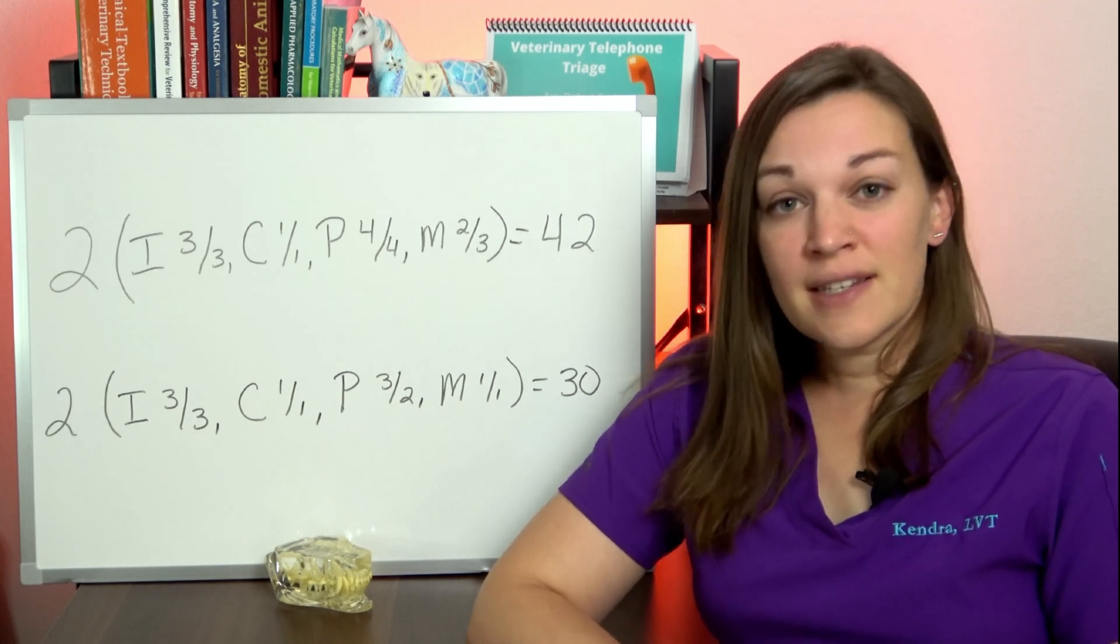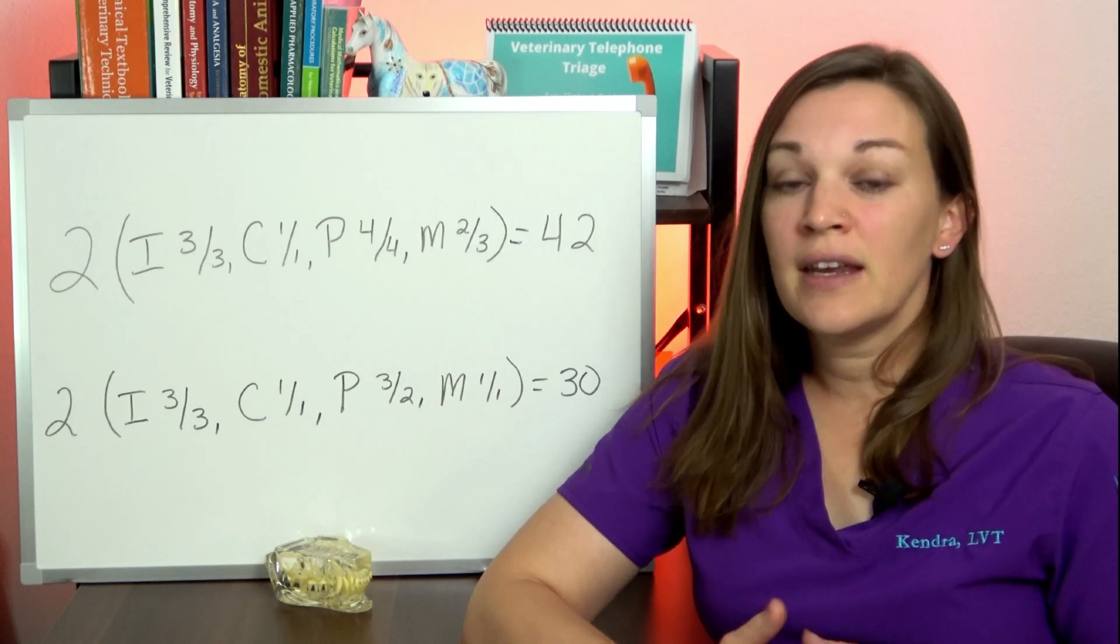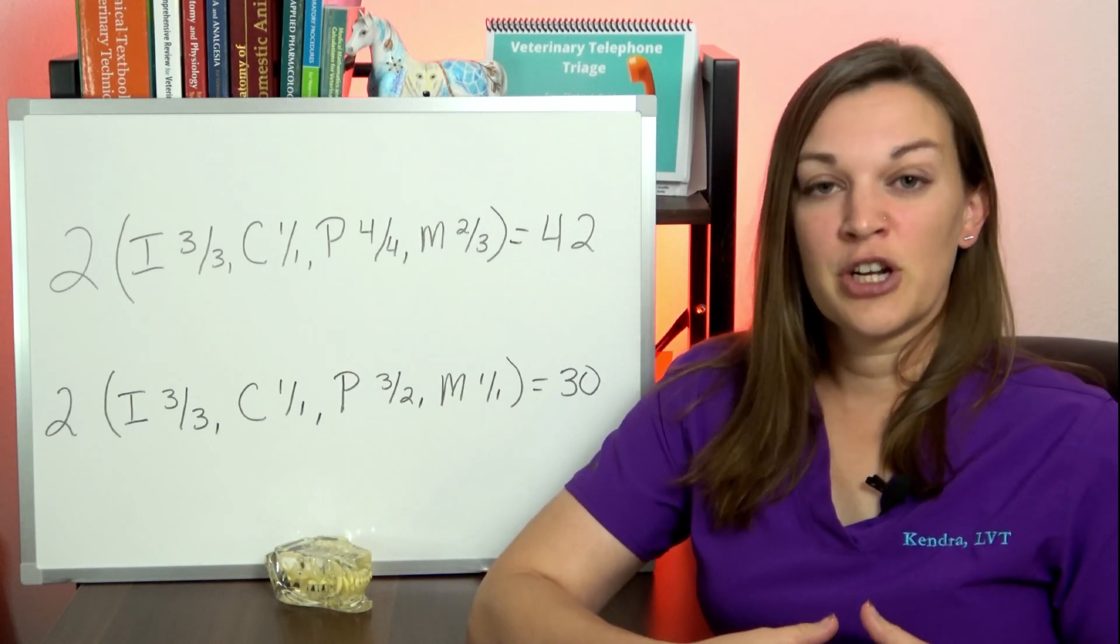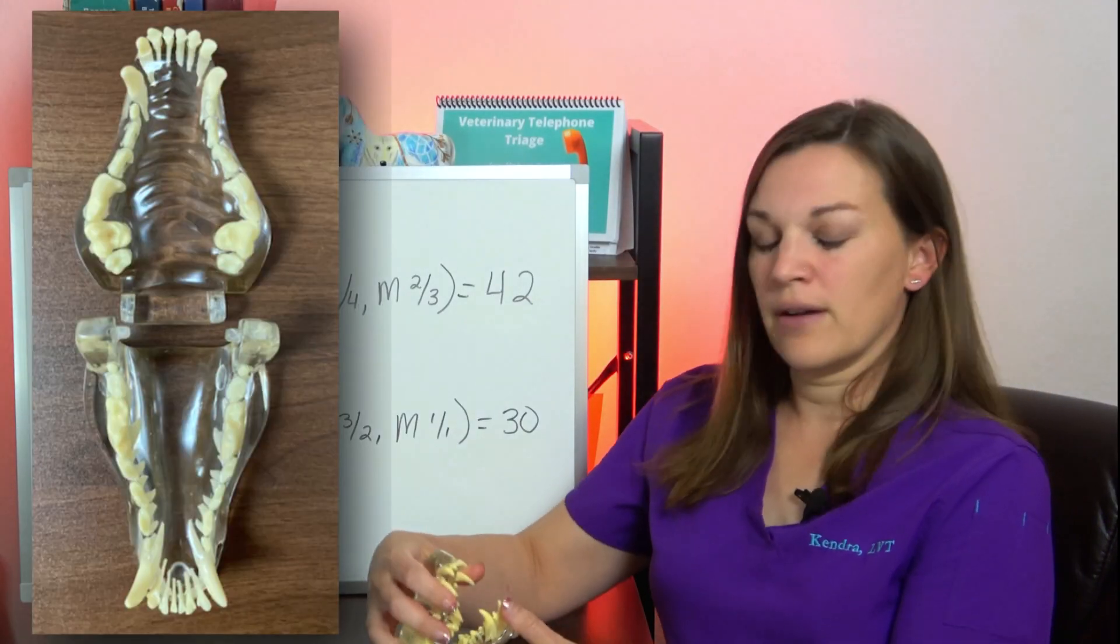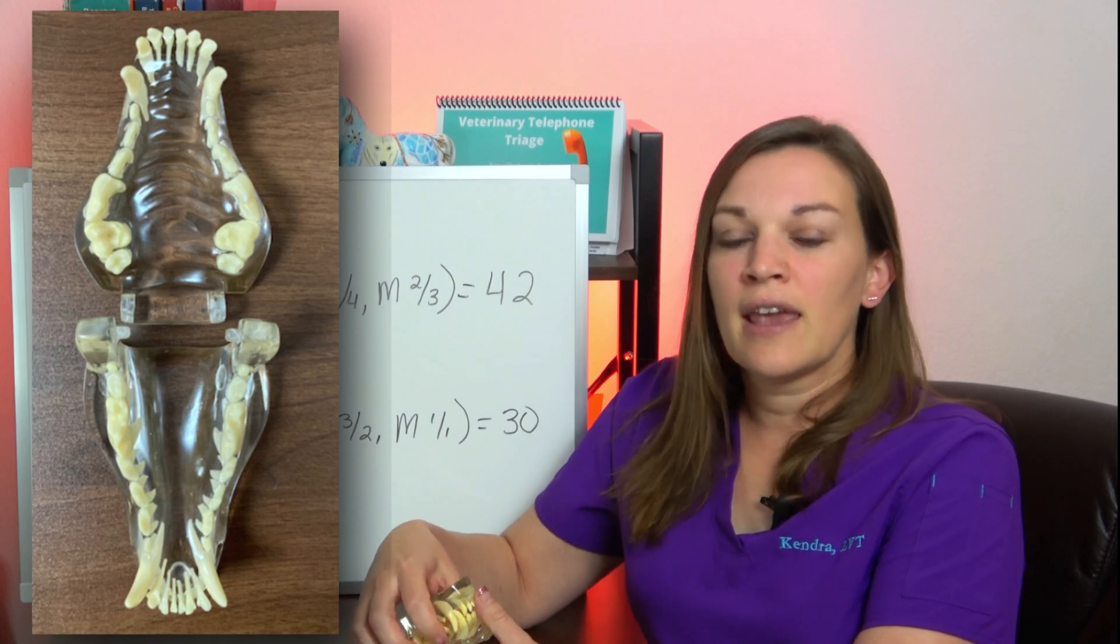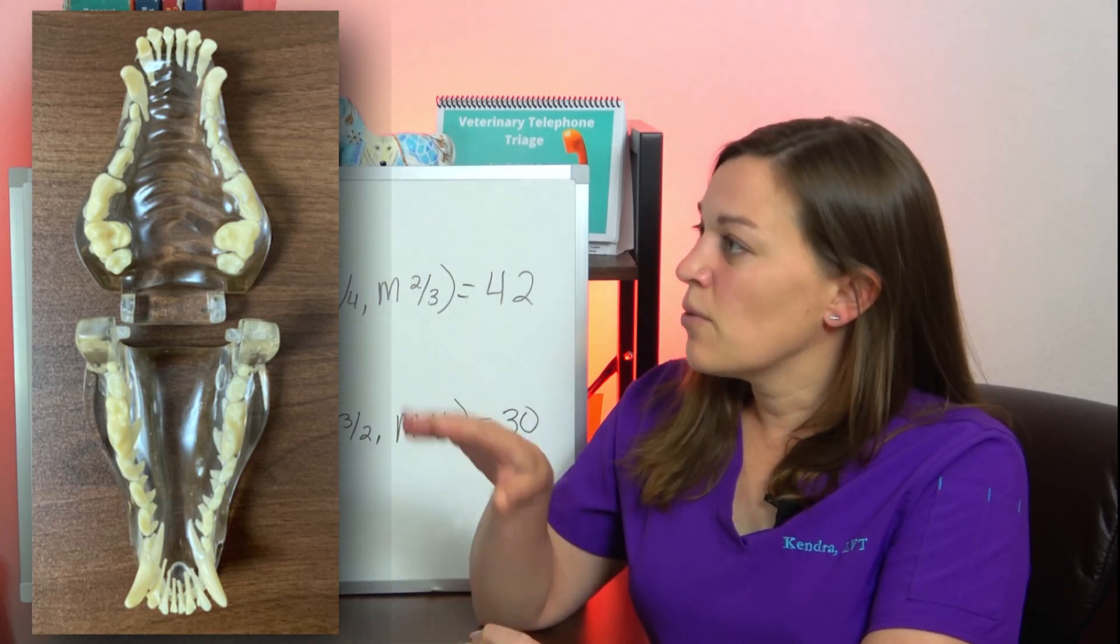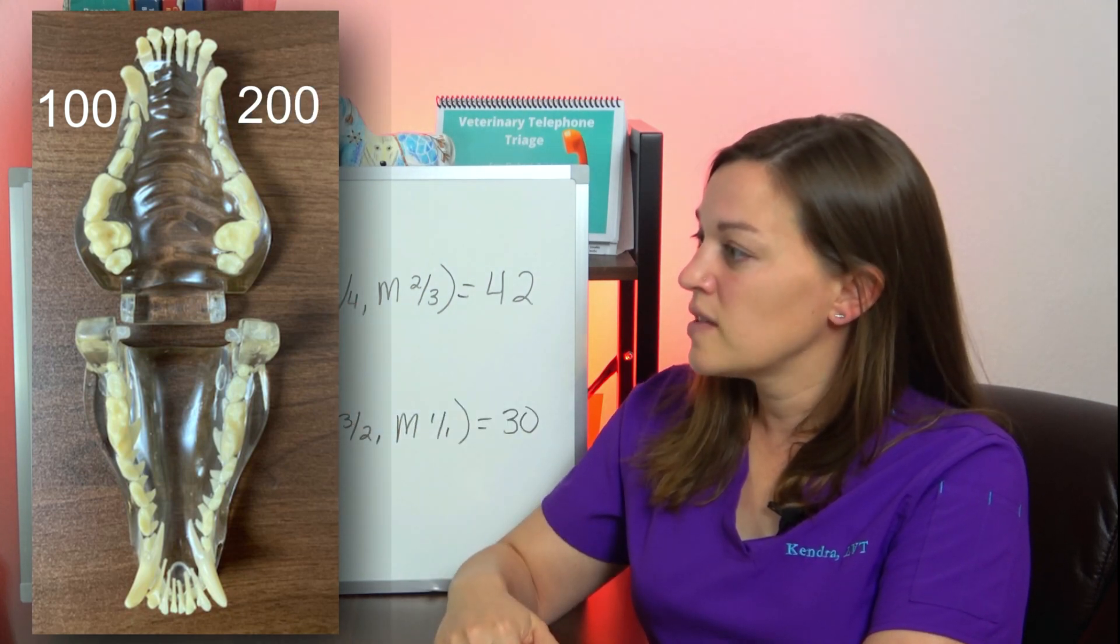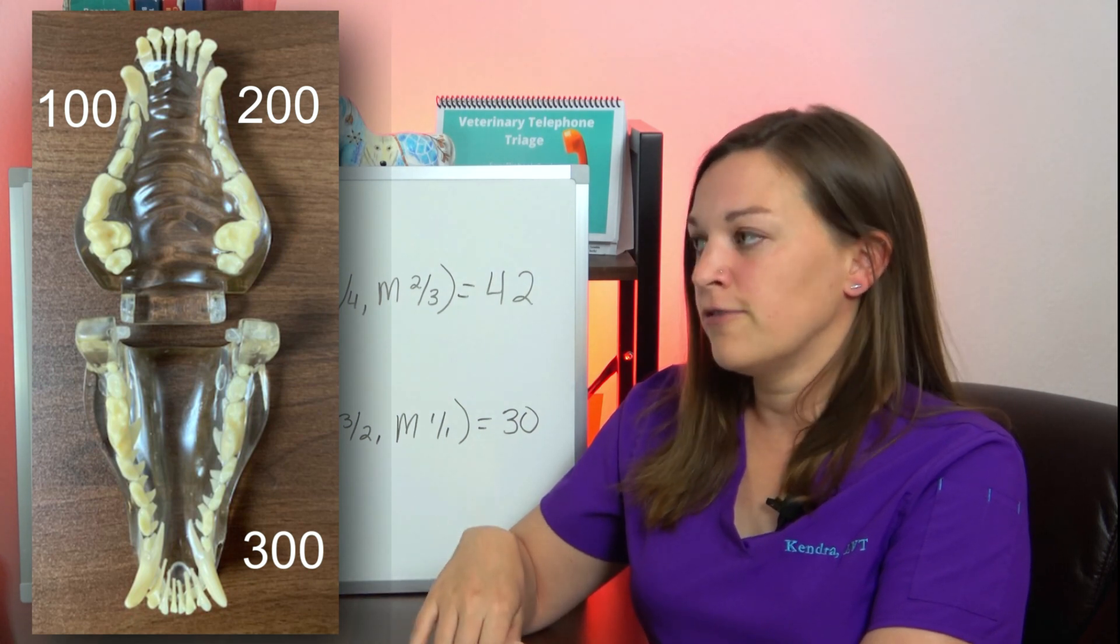When discussing the numbering system, the mouth is broken down into four different arcades and each arcade has their own hundred block designation. We'll open our model mouth and take a look here. We'll start on the upper right hand side and that's the 100s. Then we move over to the upper left for the 200s, lower left for the 300s, and lower right are the 400s.